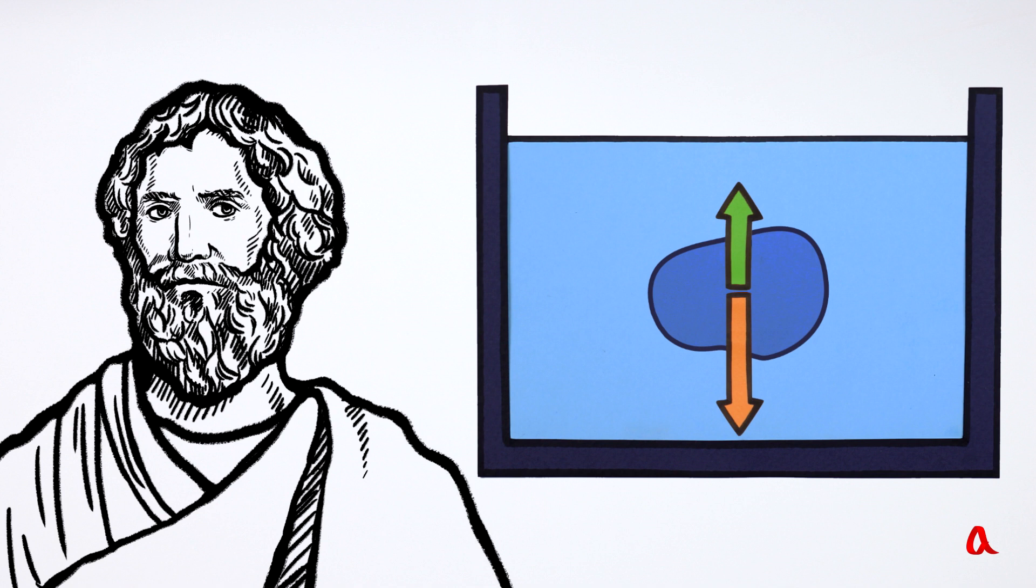Let us now consider a body of the same volume, the density of which is less than that of water. The Archimedean force remains the same, while gravity force is smaller this time. The Archimedean force is greater, so the body, which is less dense than water, will go up and float on its surface.